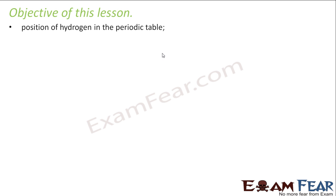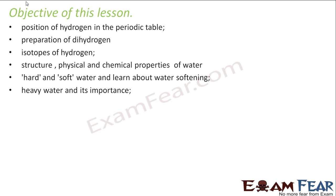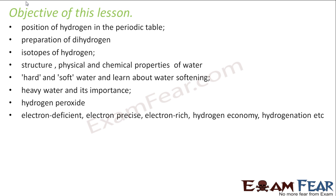The objectives of this lesson are to understand the position of hydrogen in the periodic table, the preparation of dihydrogen, and the three isotopes of hydrogen. We will also understand the structure, physical and chemical properties of water, hardness of water and how to soften it, heavy water, hydrogen peroxide, its properties, manufacture, and usage, as well as electron-deficient, electron-precise, and electron-rich hydrogen — and hydrogen economy and hydrogen elimination.